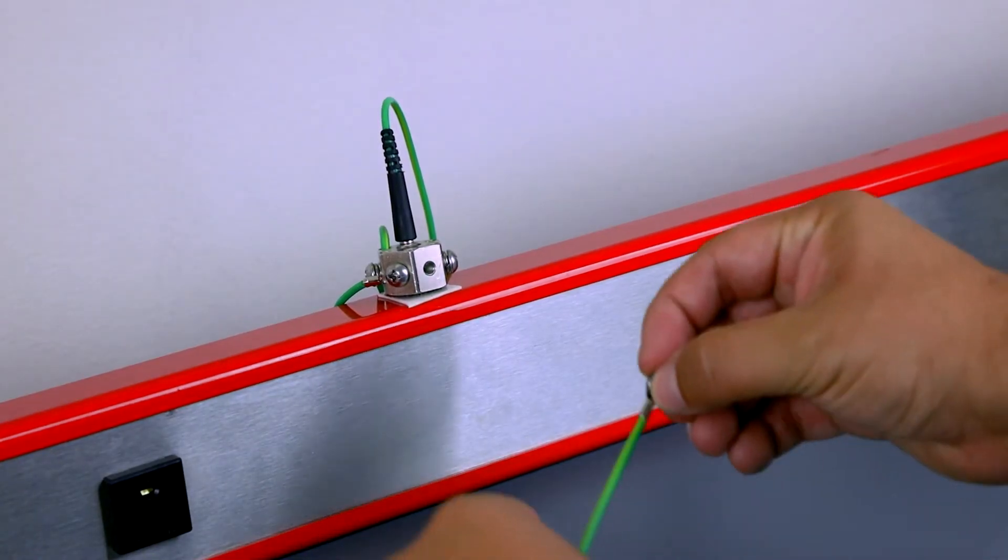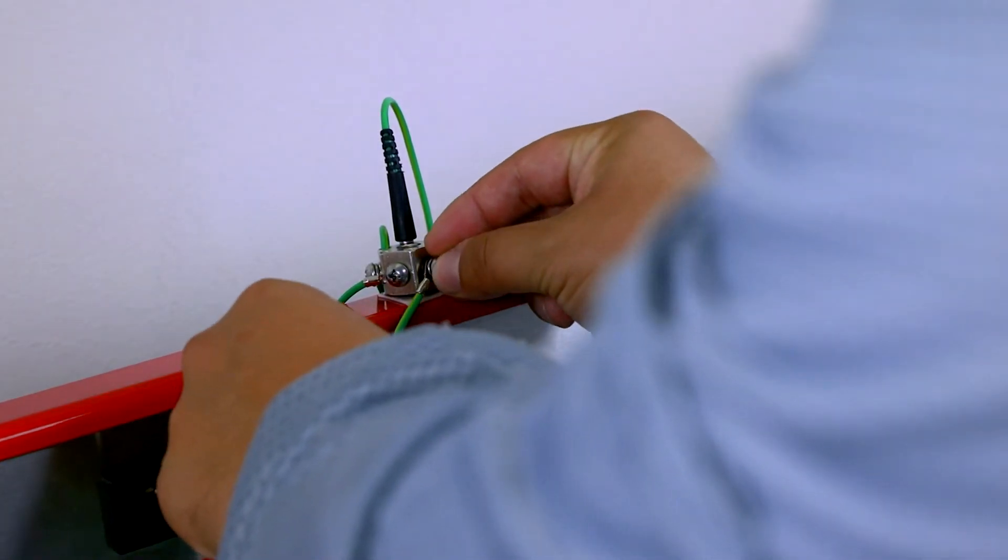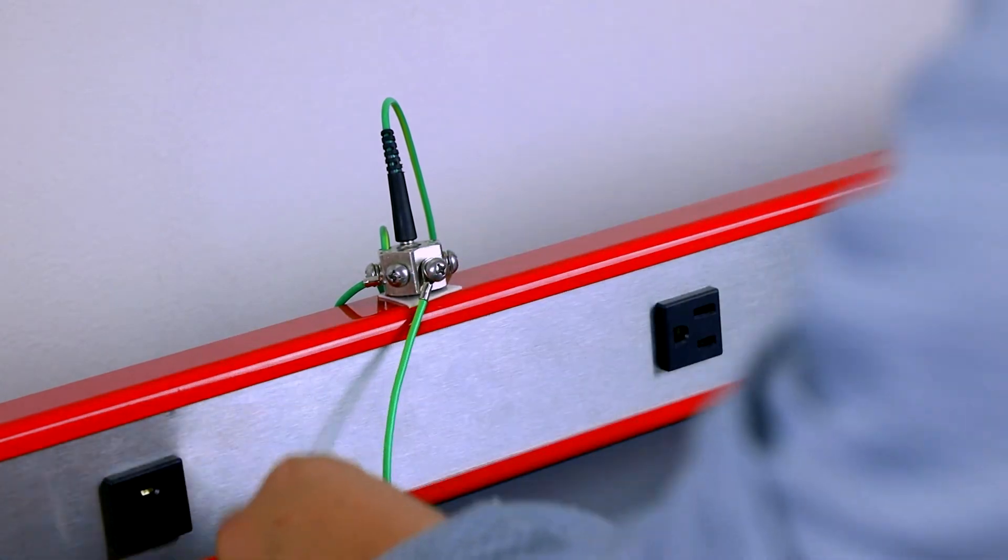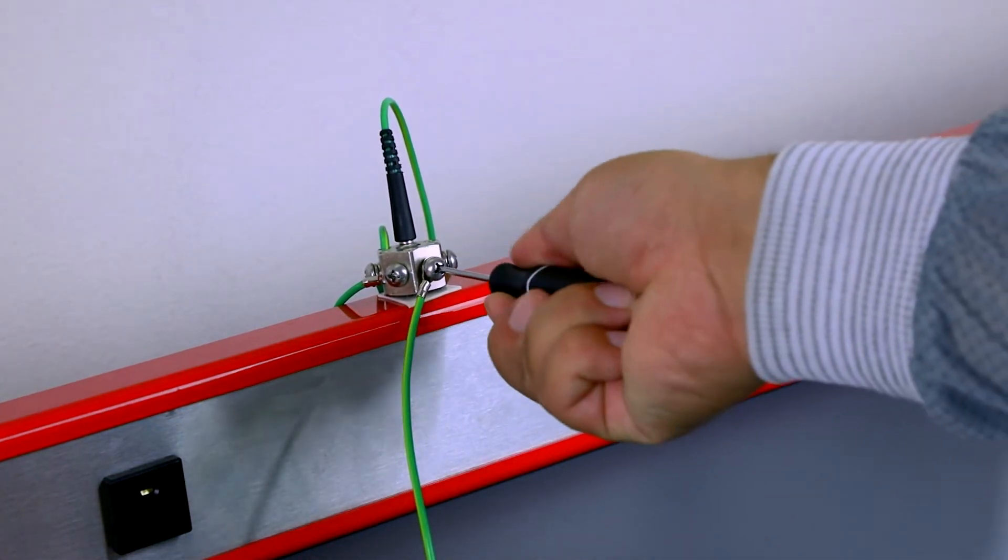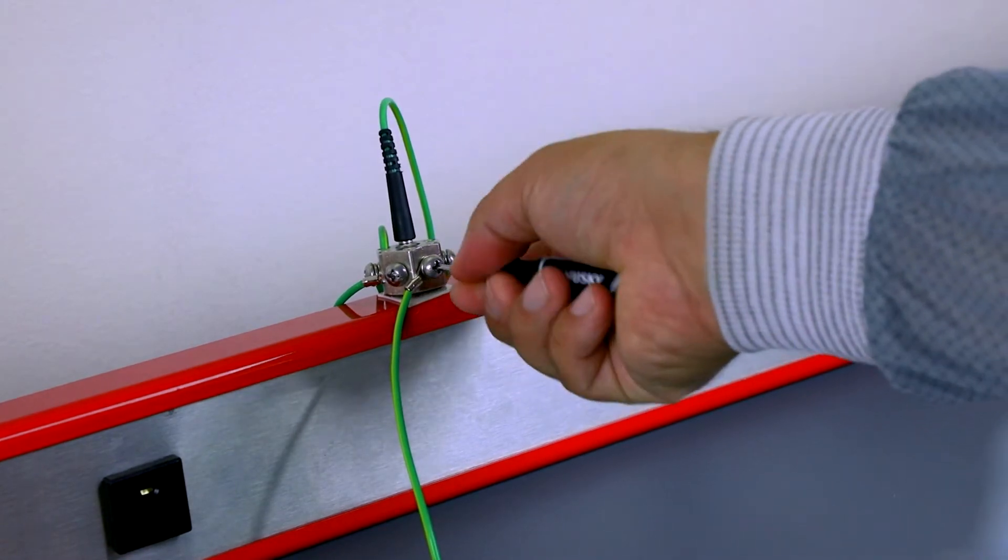Begin by connecting the green monitor ground wire to a ground facility outlet or if connected to a workbench, an installed grounding hub that is connected to the facility ground. This is done via the ring terminal end of the cord.